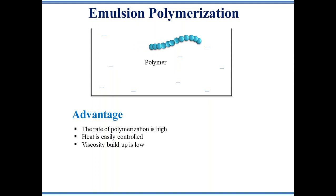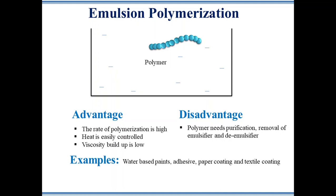The advantage of this method is the rate of polymerization is very high, which leads to high molecular weight polymers. The continuous phase water is an excellent conductor of heat, so heat is easily controlled. Polymerization proceeds in micelles, so viscosity of the system remains almost the same. The disadvantage is the polymer needs purification, removal of emulsifier and de-emulsifier. Monomers such as vinyl chloride, butadiene, chloroprene, vinyl acetate, and acrylates are polymerized by this technique, which gives water-based paints, adhesive, and coating materials.